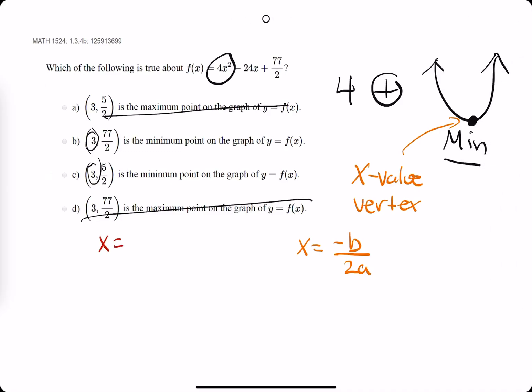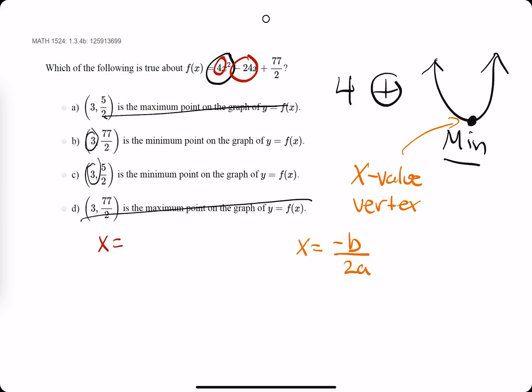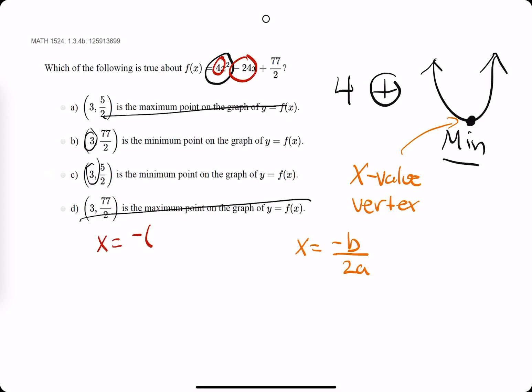So, we say x = -b. Well, our b value is -24. Our a value is a positive 4. So, x = -(-24) over 2 times a. So, 2 times 4. We get a positive 24 over 8, which is 3. So, x = 3 is the location of the vertex.